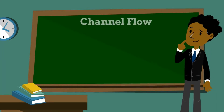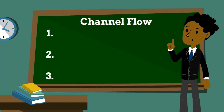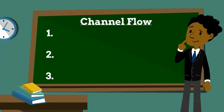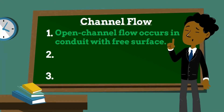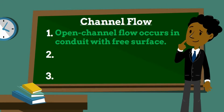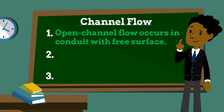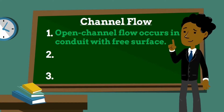Today we'll be talking about channel flow. Open channel flow is a type of liquid flow within a conduit with a free surface known as a channel. Pipe flow is a type of liquid flow within a closed conduit. These two types of flow are similar in many ways but differ in one important aspect: pipe flow does not have a free surface, which is found in open channel flow.